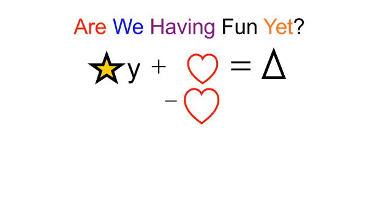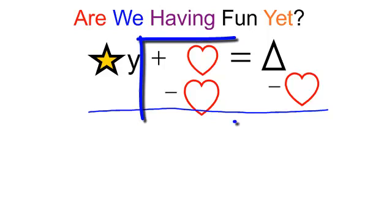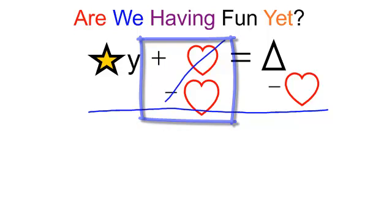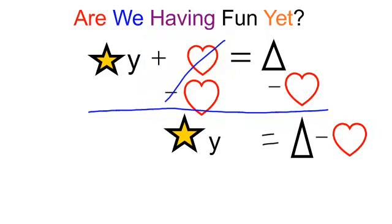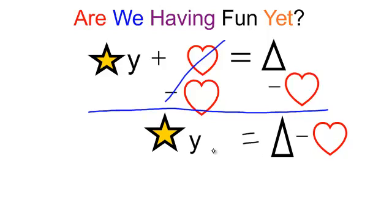But if you subtract a heart from the left, you better subtract a heart from the right. So look what happens. A positive heart and a negative heart cancel each other out. So I now have star y equals triangle minus heart.